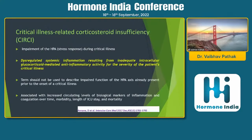This is what has led to the term critical illness-related corticosteroid insufficiency, or CIRCI. A few decades ago this was known as relative adrenal insufficiency, but in 2008 this term was given. It is defined as a dysregulated systemic inflammation resulting from inadequate intracellular glucocorticoid-mediated anti-inflammatory activity for the severity of the patient's critical illness. We must be careful that this term should not be used in patients who already have primary or secondary adrenal insufficiency.